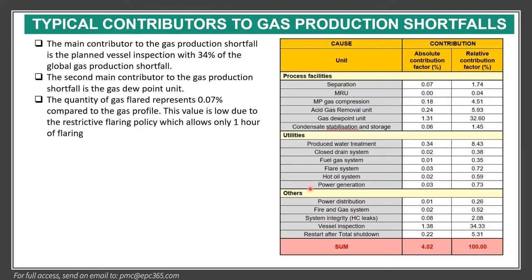This is a typical executive summary. For example, vessel inspection contributes 34% to unavailability, and the second main contribution to gas production shortfall is the gas dew point units. Based on that, you can see the contribution to plant unavailability and get recommendations and conclusions.